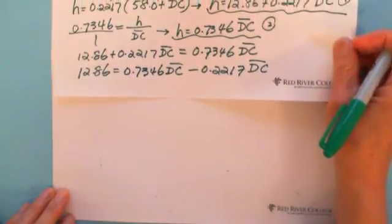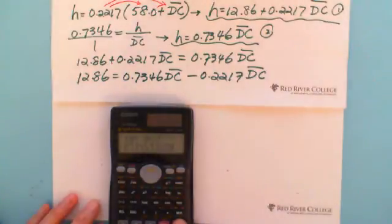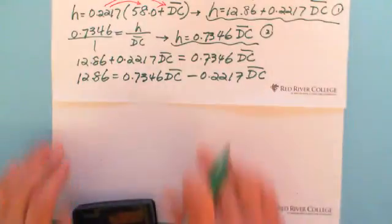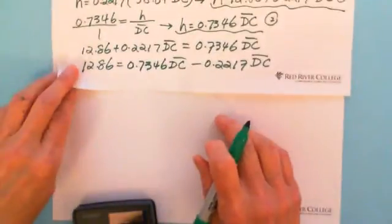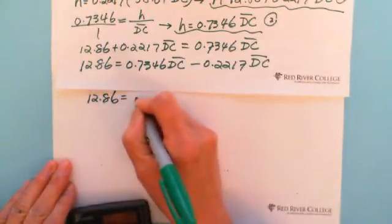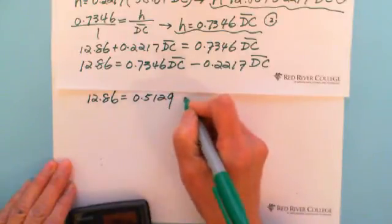Let's do subtracting. We have 0.7346 minus 0.2217, we got 0.5129. So we have 12.86 equals 0.5129 times DC.